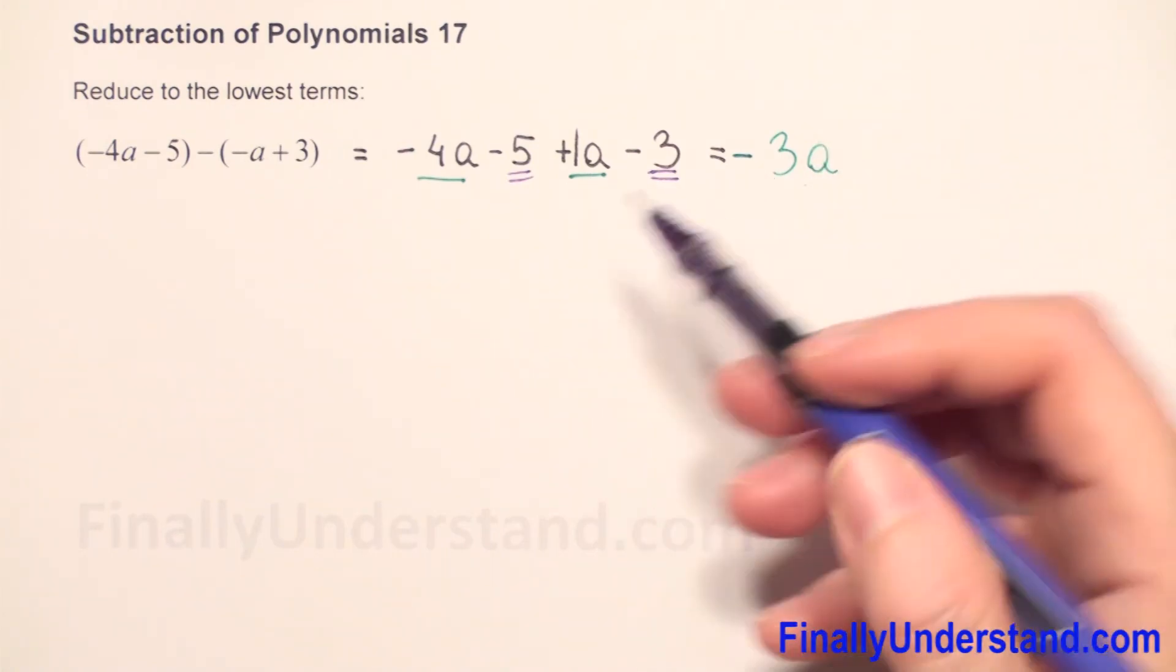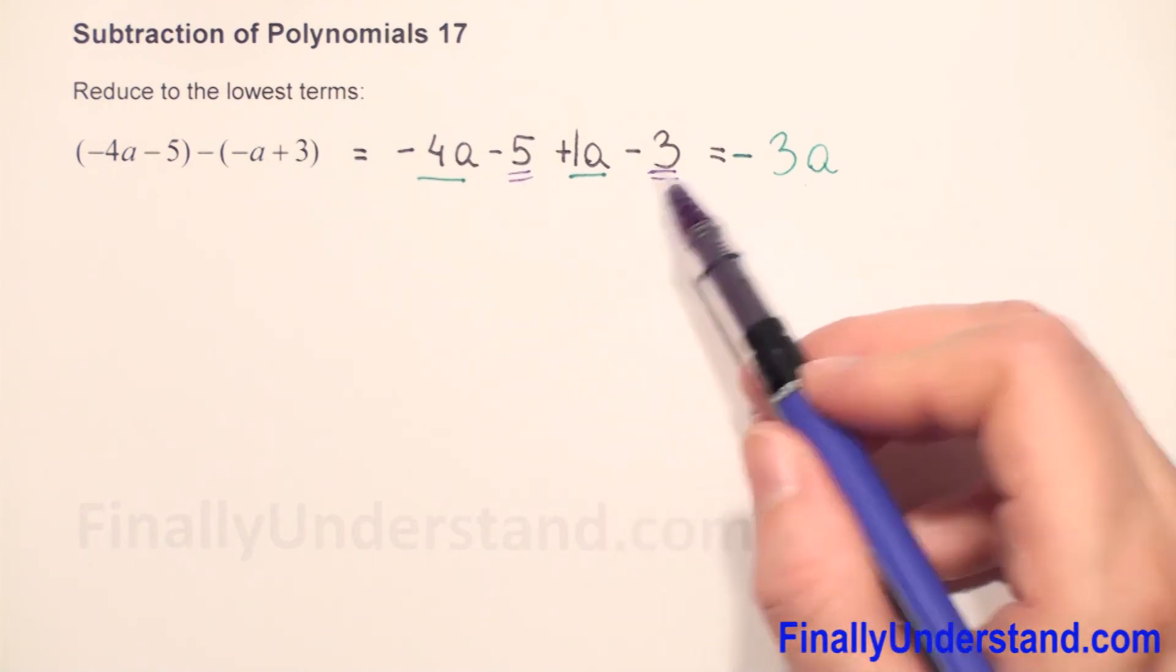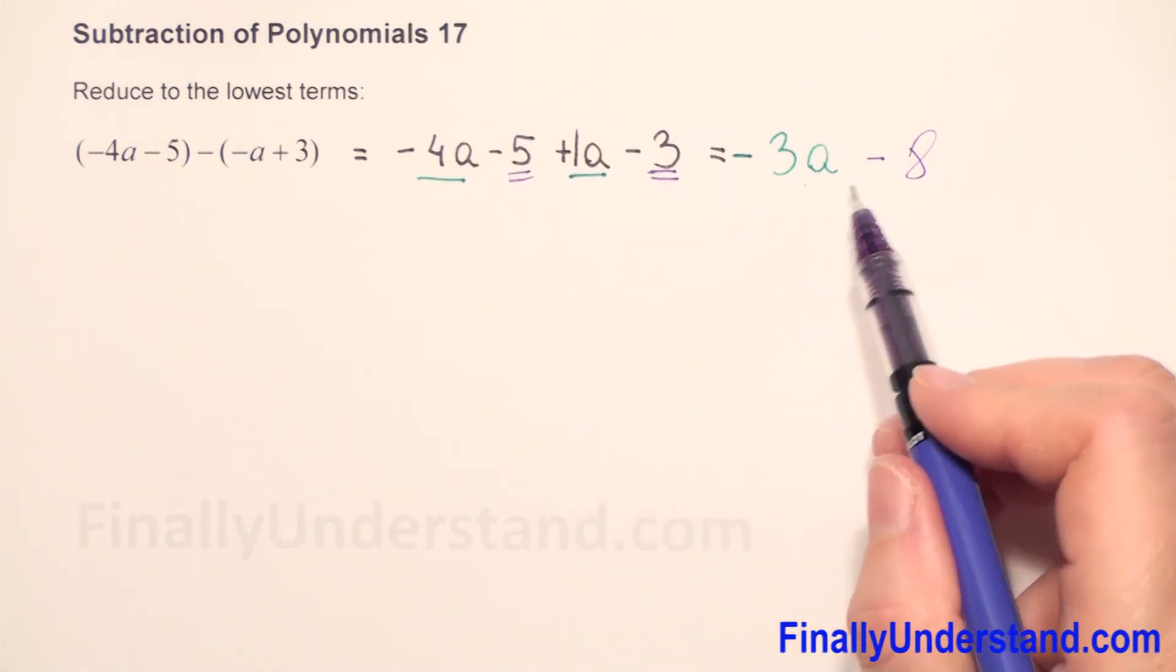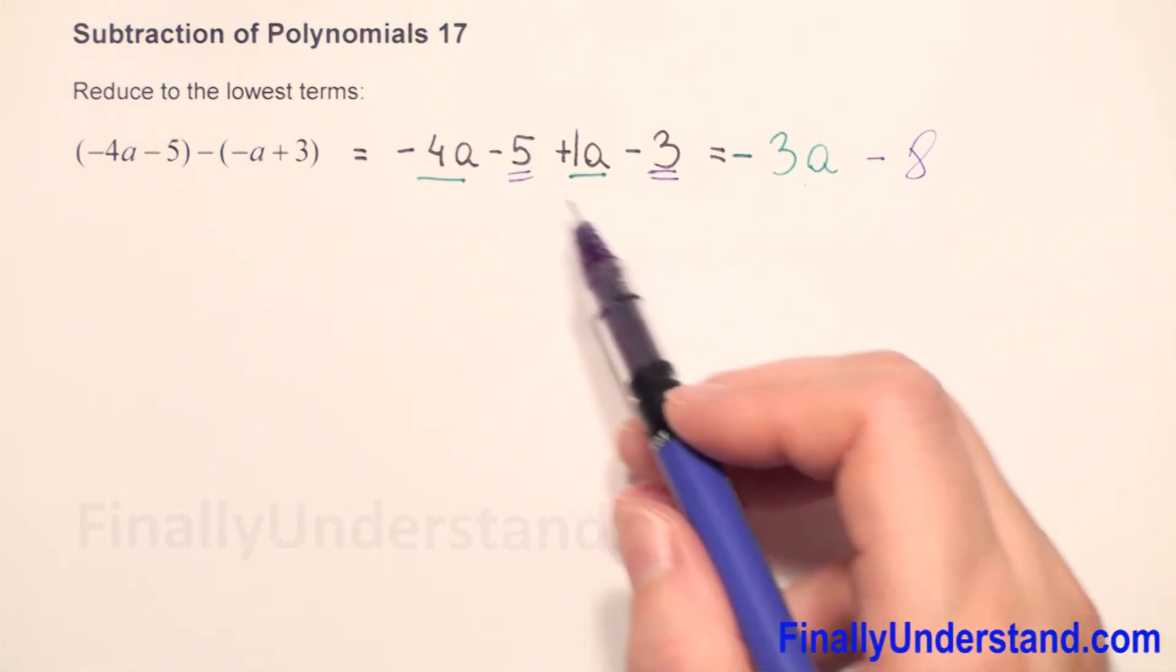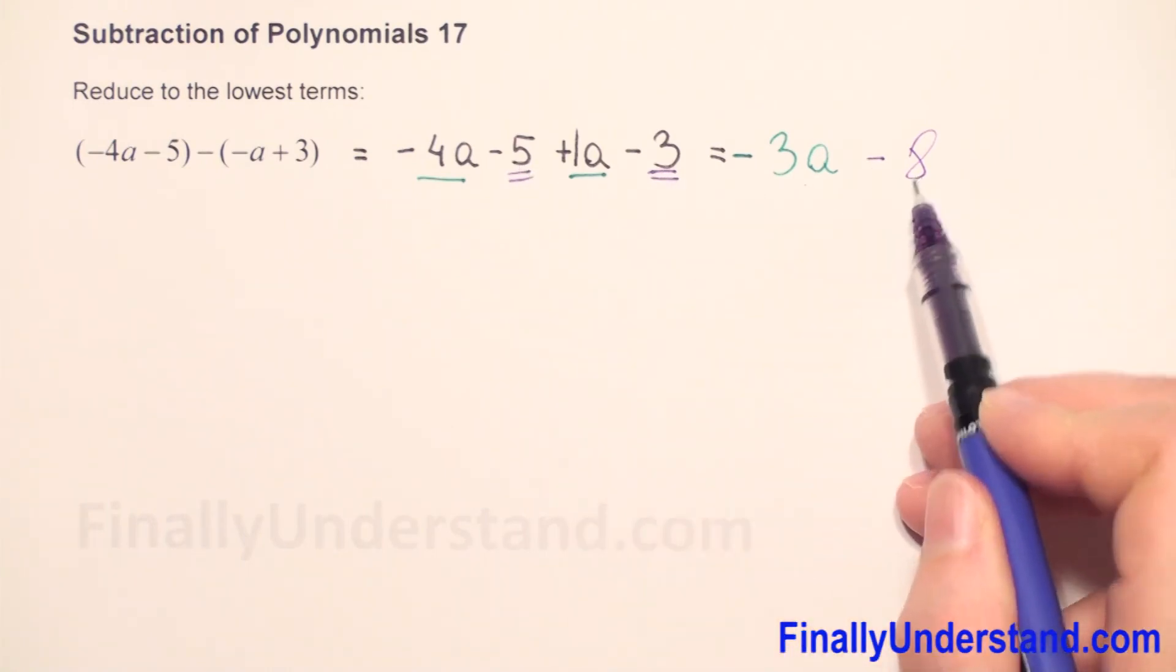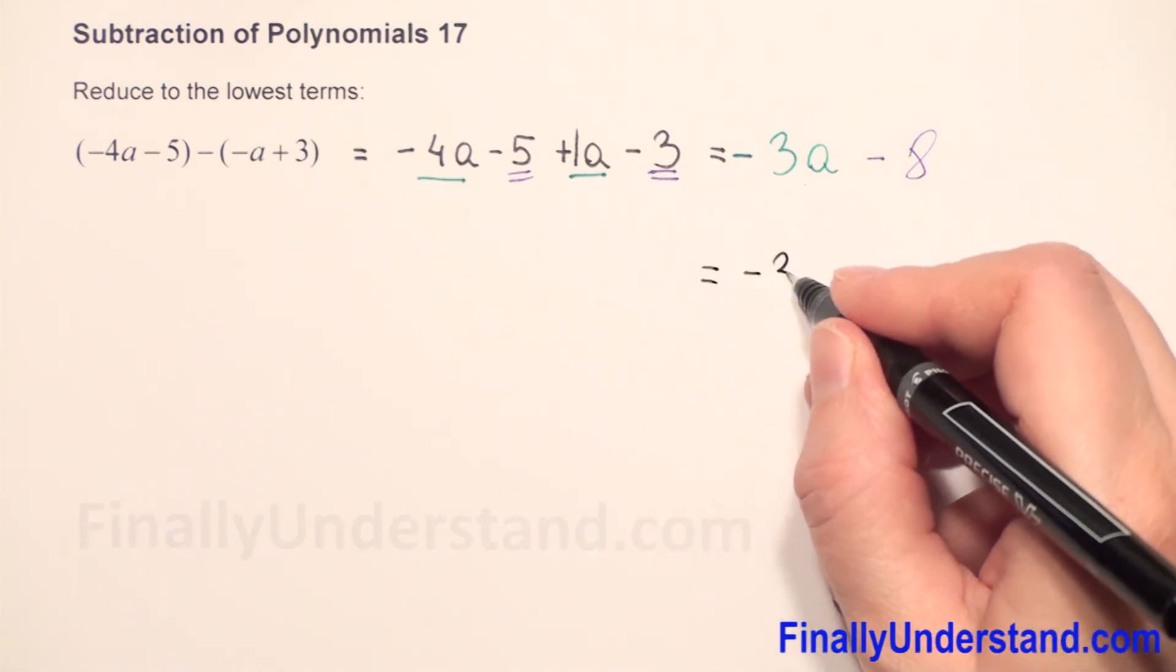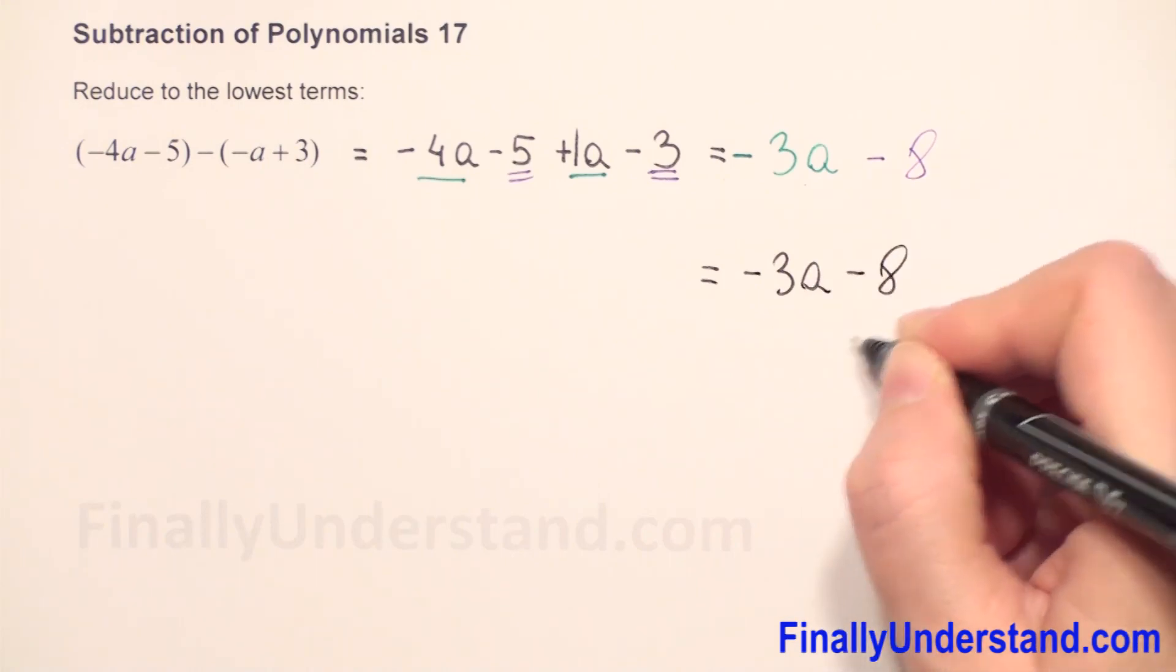And next, we have negative 5 and negative 3, which is negative 8. Both numbers are negative, so we keep the sign negative, and we just add: 5 plus 3 is 8. So let me rewrite. Our solution is negative 3a minus 8.